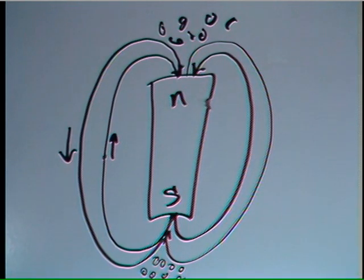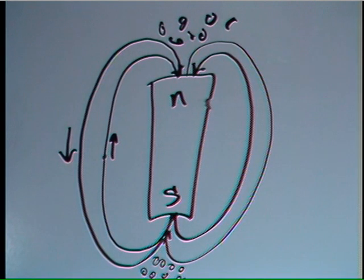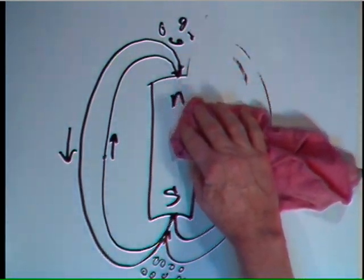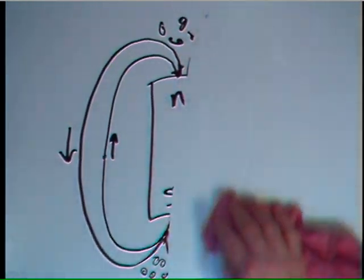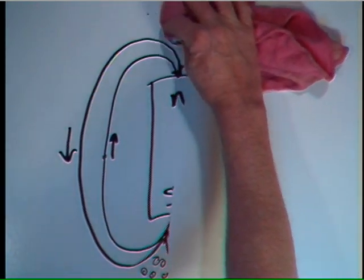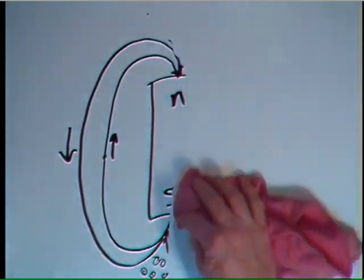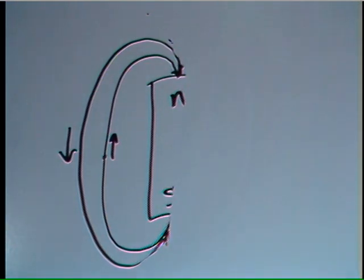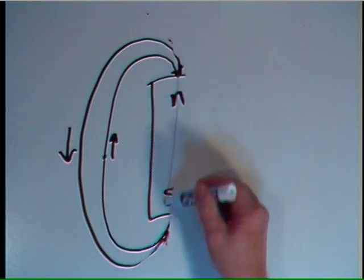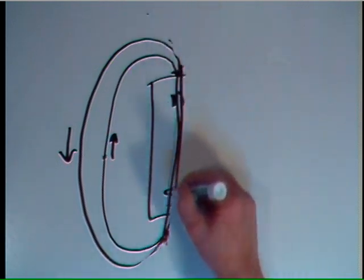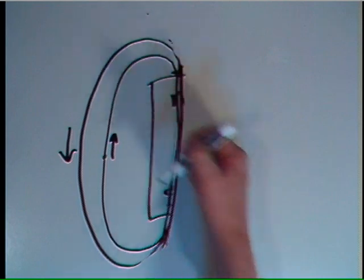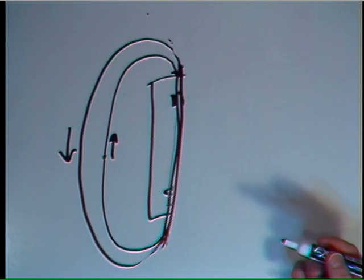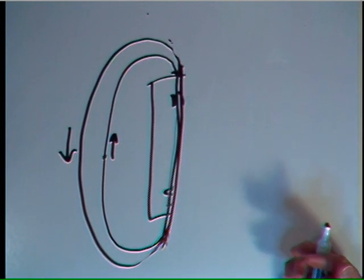Now, what Ed Leedskalnin had done is he actually kind of cut this in half, eliminating a dipole and just having lines of magnetic force going this way. So they circulate in one continuous loop. He called this his perpetual motion holder.